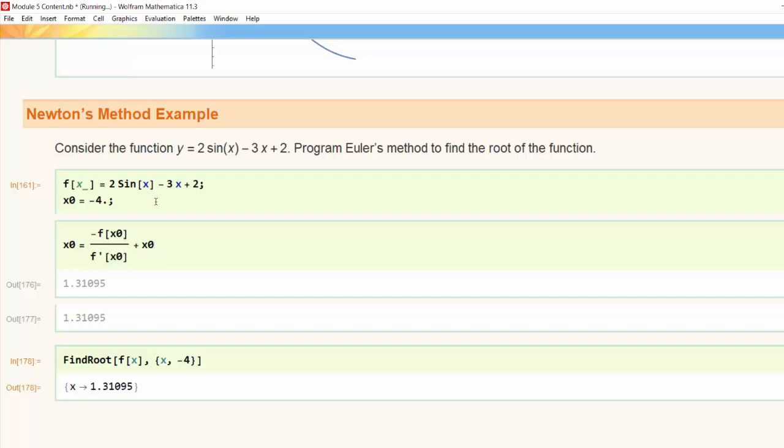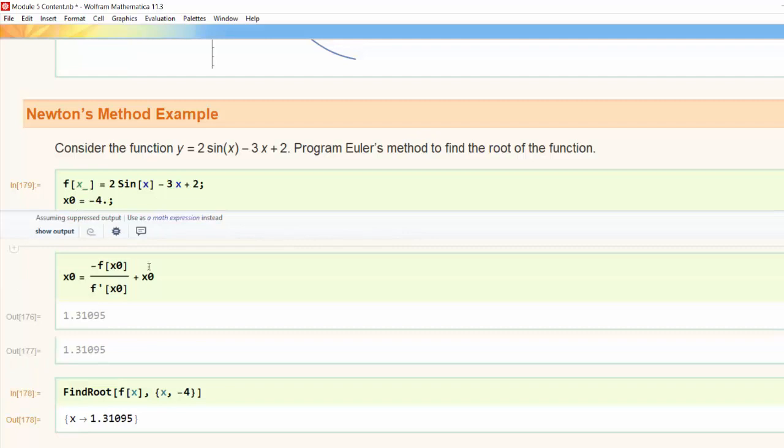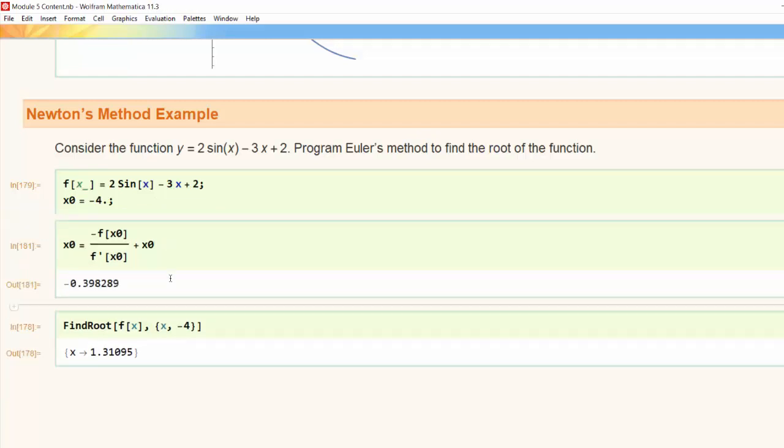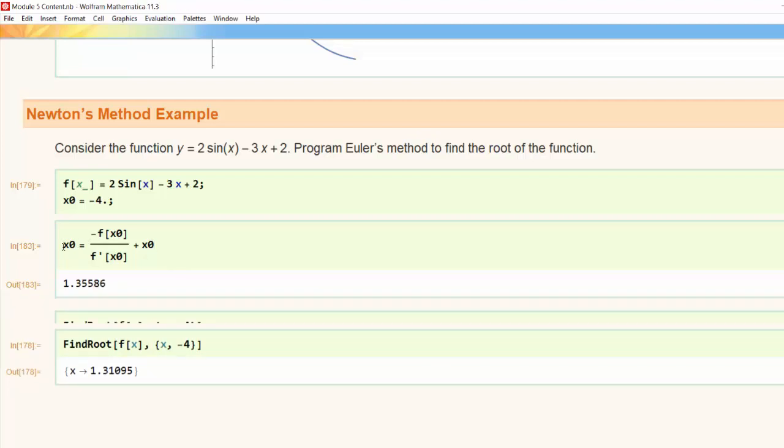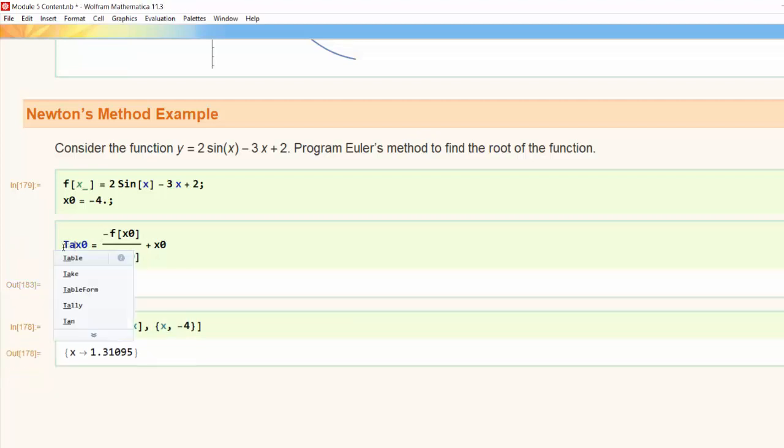So now if I rerun my initialization cell starting that x₀ back at -4, put my cursor in here I can keep rerunning it so I can see that I am getting the same values but now what I'd really like to do is just build a table of these values